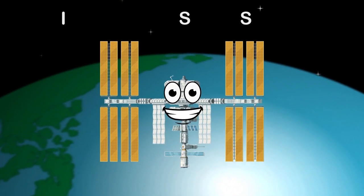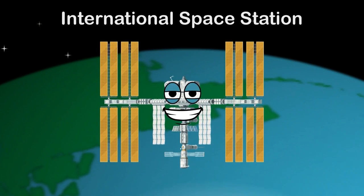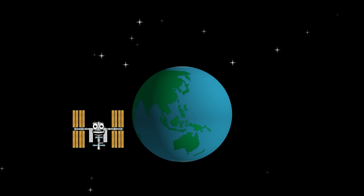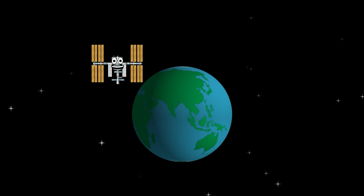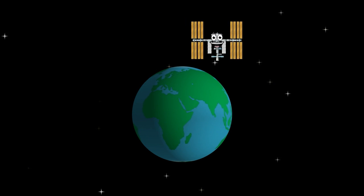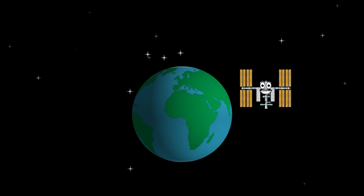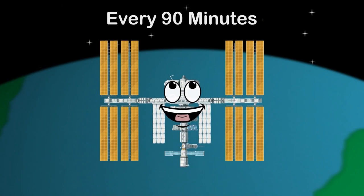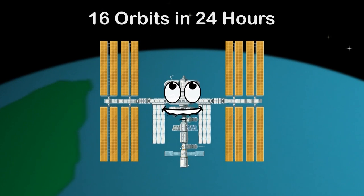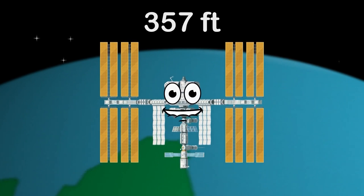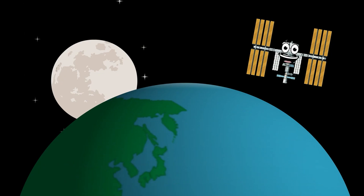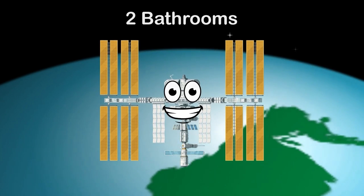I'm the ISS, the International Space Station. 1998 was the year that begun my construction. I make multiple orbits around the Earth every day. I fly around the world every 90 minutes. I orbit the Earth 16 times in 24 hours. I'm 357 feet long from end to end. After the moon, I'm the second brightest object in your sky. I have two bathrooms on board and one gym. I have six sleeping quarters and six spaceship docks.